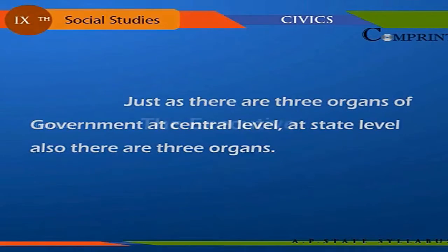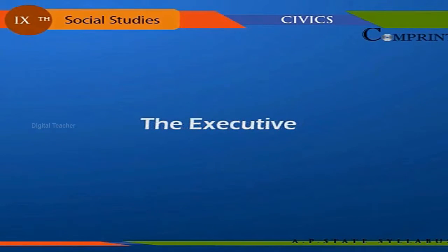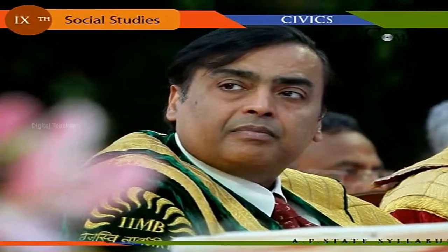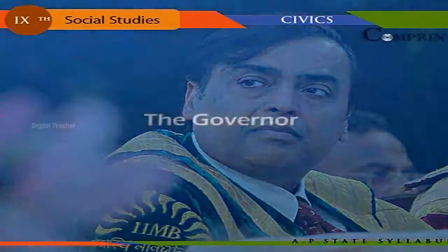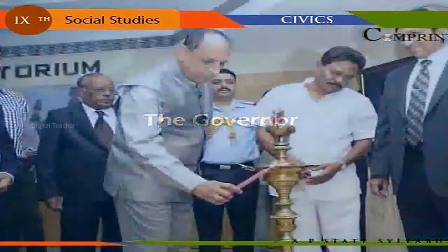The first organ is the executive. The state executive consists of the Governor, the Chief Minister, and the Council of Ministers. The Governor is a nominal executive — the administration in the state is run in his name. He is the head of the state constitutionally. The executive head of the state is the Governor, appointed by the President on the advice of the Prime Minister.